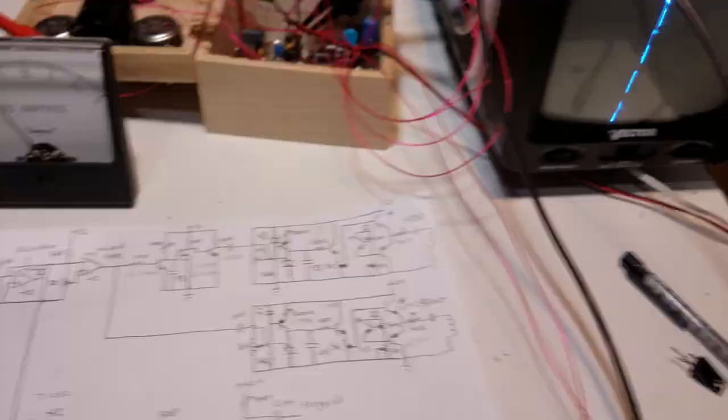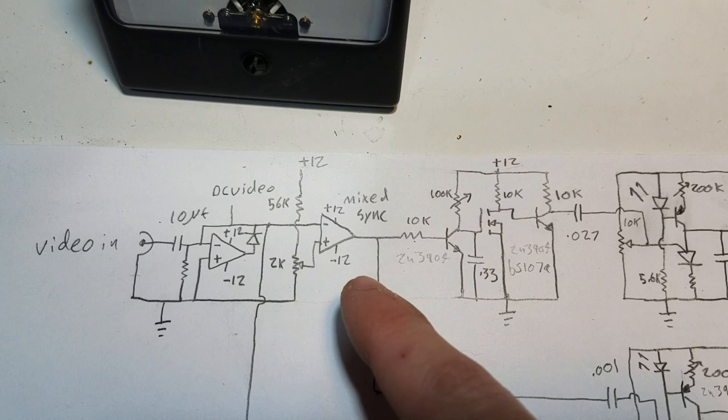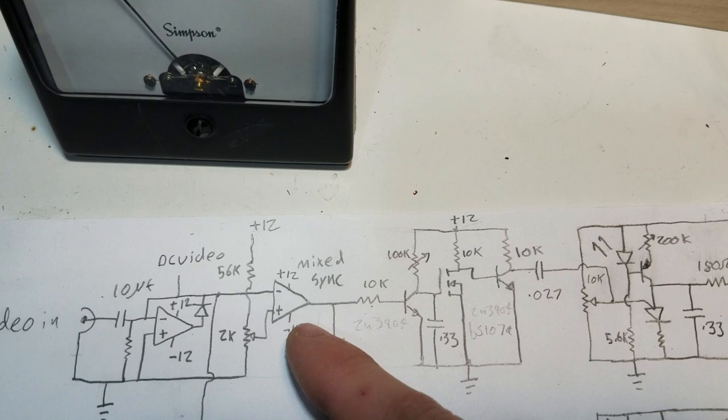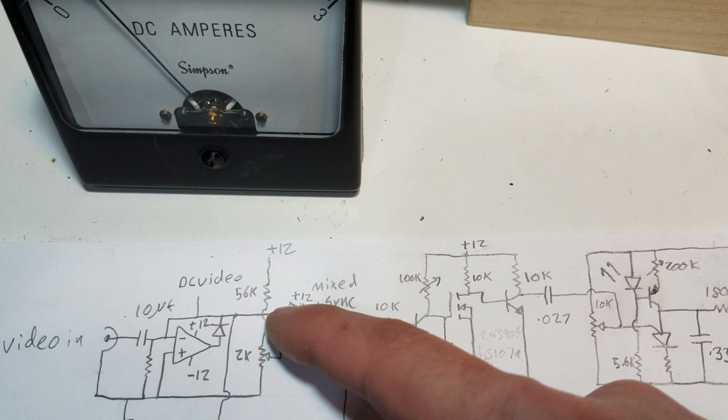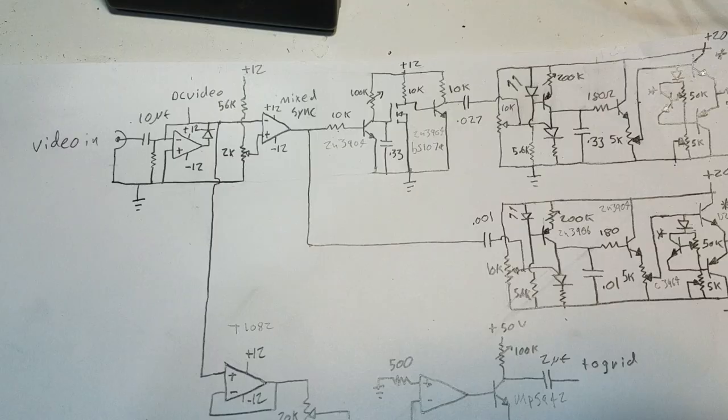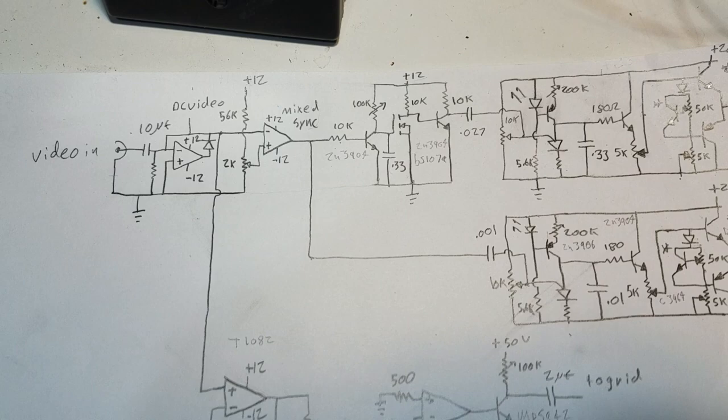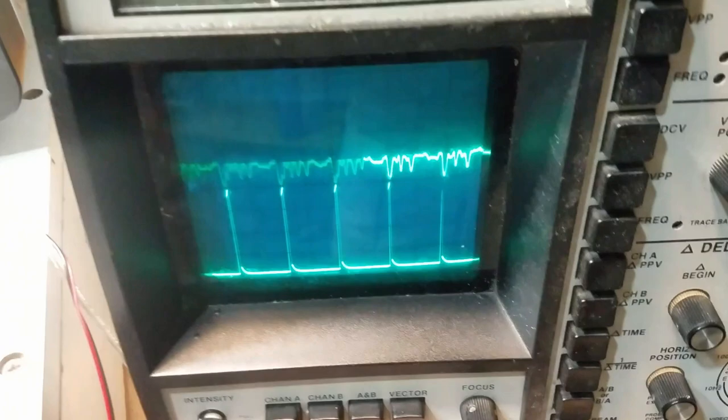From there it goes into this sync separator, which is basically just an op-amp configured as a comparator. So whenever it sees this input go lower than its non-inverting input, it's going to send its output high to give us a sync pulse. I'm now hooked up here and here. If we take a look at the scope, whenever the input goes low, we get a sync pulse at the bottom, and that represents the start of a new line.